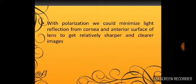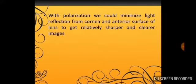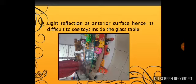So no unwanted light like reflection from anterior surface of the cornea, anterior surface of the lens, they will minimize and we will get a clearer, sharper and brighter image. With polarization, we could minimize light reflection from cornea and anterior surface of the lenses and get very sharp image.